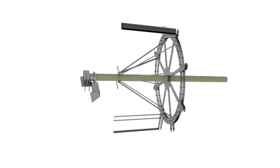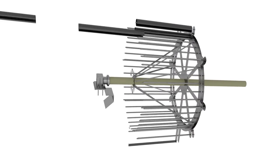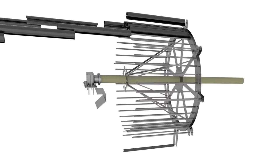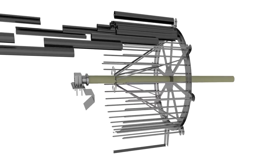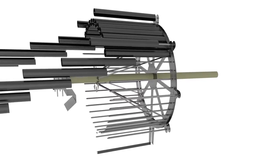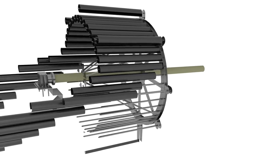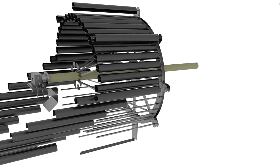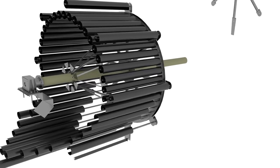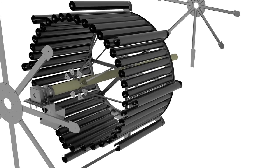Each air rotor is comprised of several pipe bundles mounted at the periphery of the rotating mechanism. The support for these media bundles is a structural steel cage comprising a center shaft, cage assemblies, and diagonal supports.